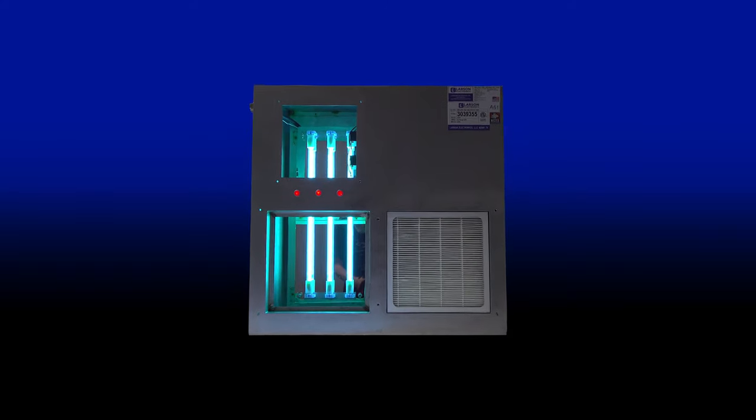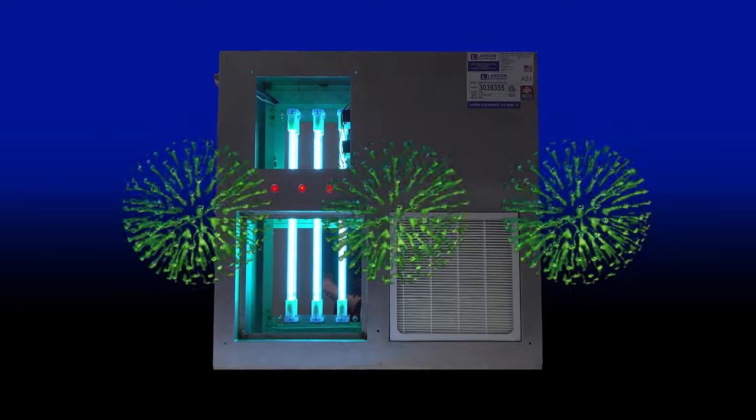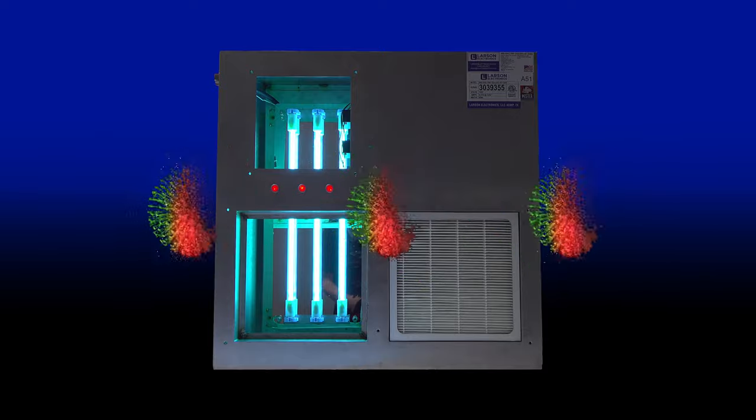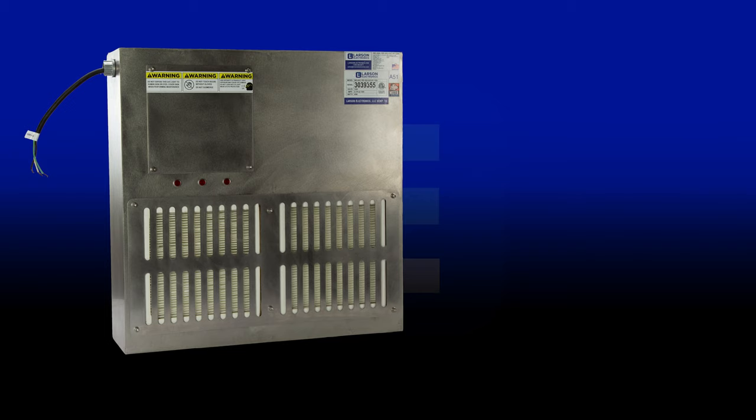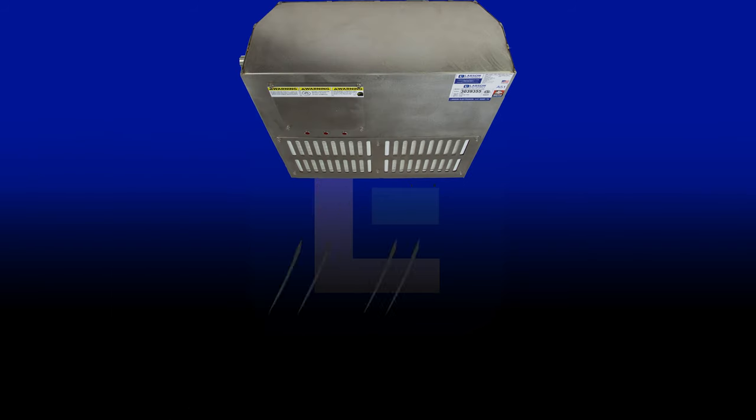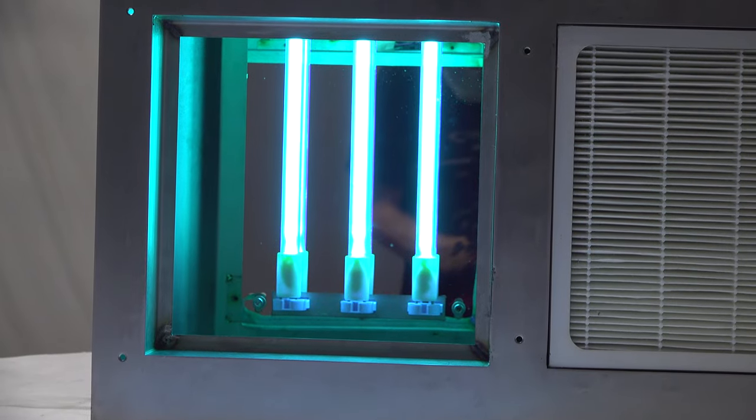The industrial air purifier offers a UV output range of 254 nanometers and comes equipped with three T8 UV-C fluorescent lamps. This air purifier is also made of 304 stainless steel. This unit draws in dirty air and passes it through the UV sanitation chamber where it is treated with powerful UV-C.